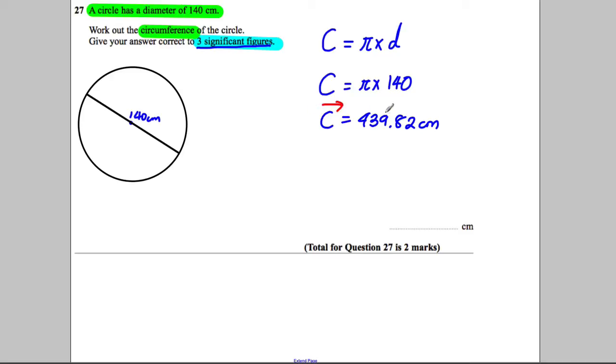Significant figures: as you look at the number from left to right, there's the first, the second, the third. Put a line after the third. Because this is an 8, we round up to 10.